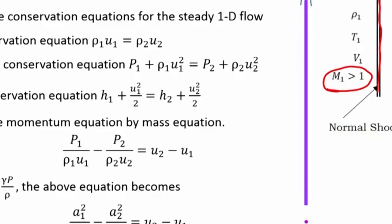This is a one-dimensional flow with no heat transfer or work done, so it is an adiabatic flow — please make note, it is an adiabatic flow. As we work through the equations, we will find that shocks generate entropy, so it is not an isentropic flow and not an isentropic process.